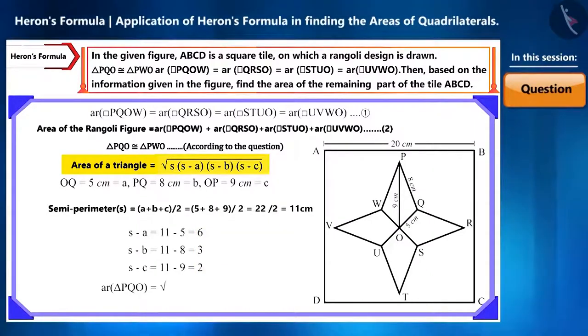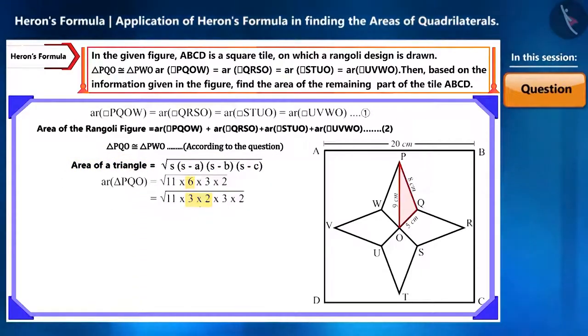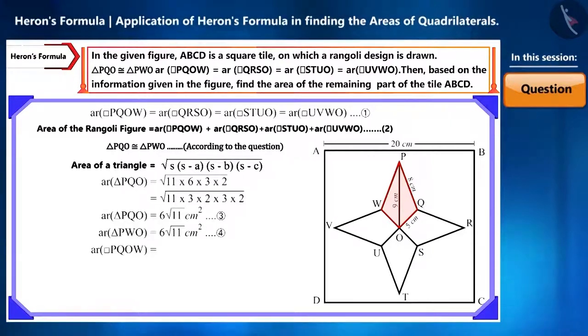Now we can substitute all these values in Heron's formula and solve it. And we obtain the area of triangle PQO as 6√11 cm². And both these triangles are congruent. Therefore, the area of triangle PWO will also be this. Now we can obtain the area of quadrilateral PQOW by adding these two. We obtain it as 12√11 cm².